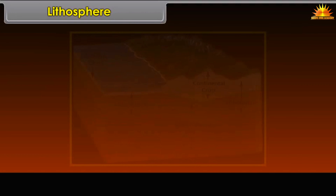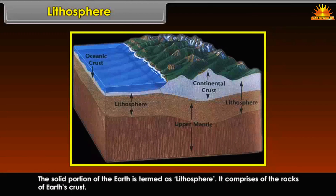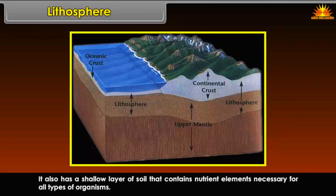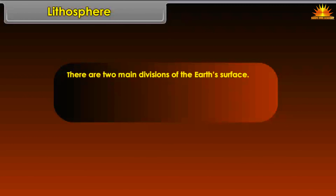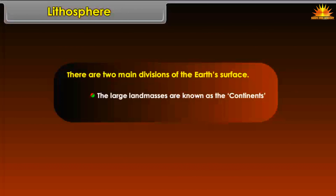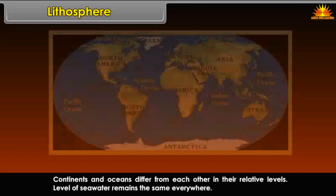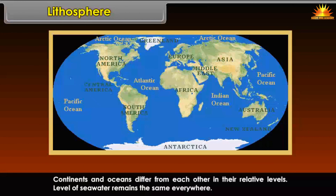The solid portion of the Earth is termed as Lithosphere. It comprises the rocks of Earth's crust and also has a shallow layer of soil that contains nutrient elements necessary for all types of organisms. There are two main divisions of the Earth's surface: the large land masses known as continents, and the ocean basins which contain large water bodies.